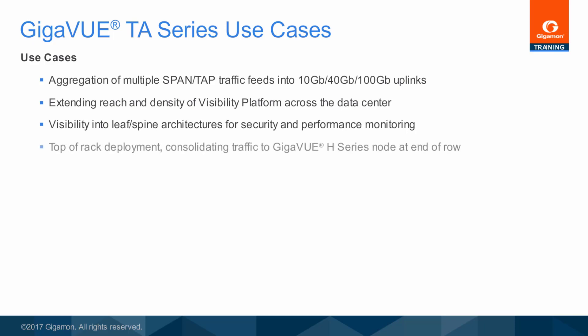For more routine needs, using the Gigaview TA series nodes to forward traffic from multiple links in a top-of-rack deployment, sending that traffic to centralized tools through other Gigaview H series nodes means any traffic anywhere in the network can be made available quickly and at line rate.